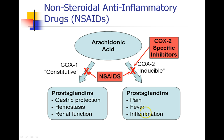NSAIDs typically block both enzymes — they're nonspecific — so we get the good effects of avoiding pain, fever, and inflammation, but we also lose gastric protection, hemostasis, and renal function. There are COX-2-specific inhibitors which act only on the COX-2 enzyme, which we'll discuss later.